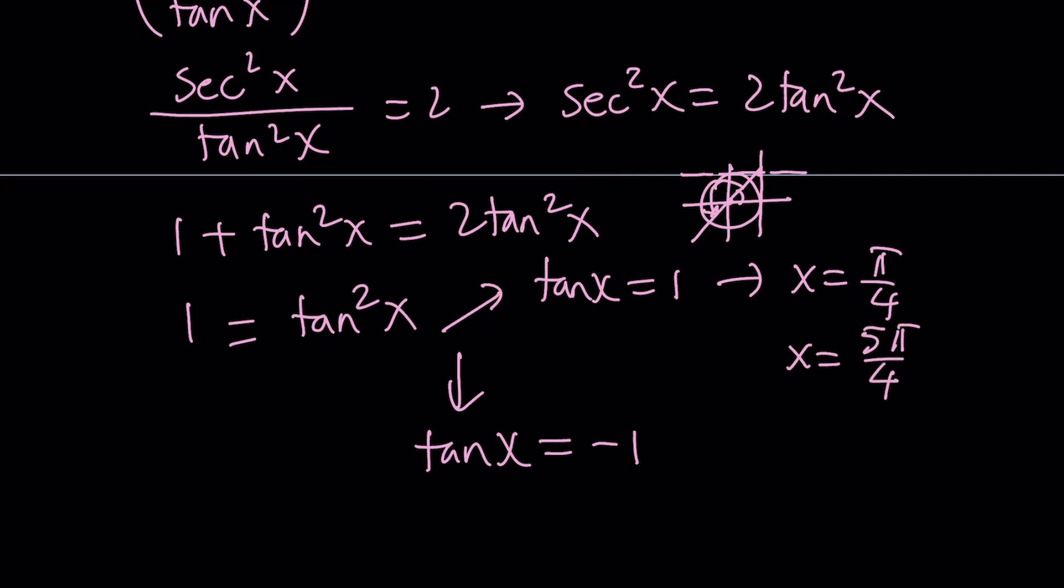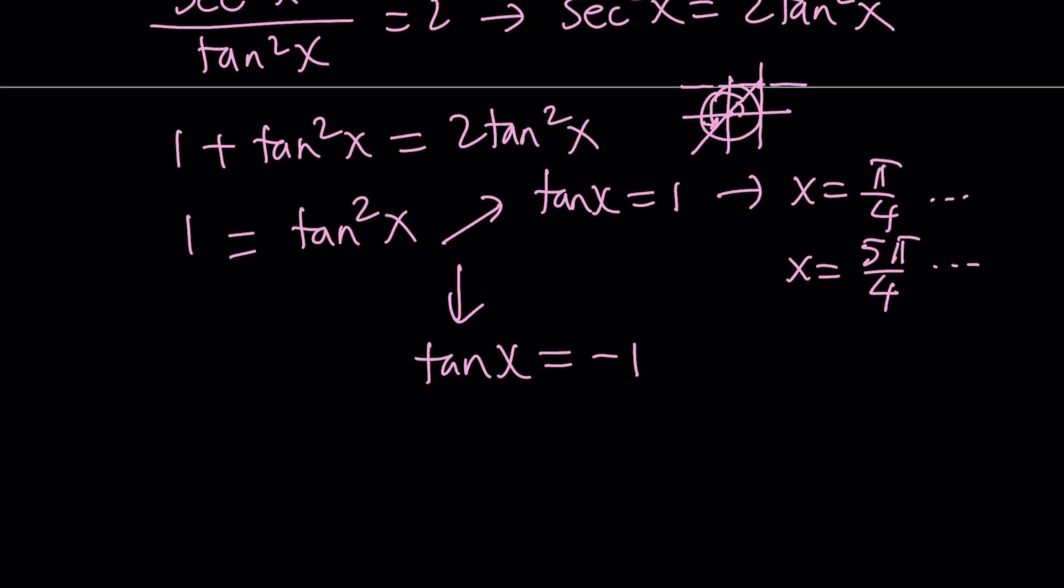So another solution would be pi plus pi over 4, which is 5 pi over 4. And obviously, you could also write the general solution as pi over 4 plus multiples of 2 pi. So there's going to be infinitely many solutions.